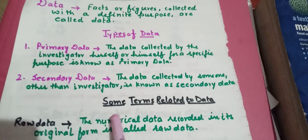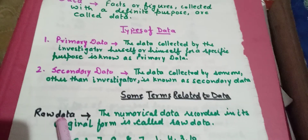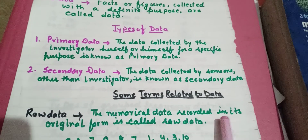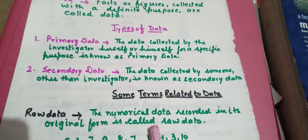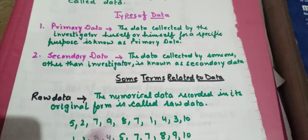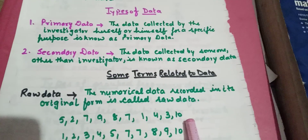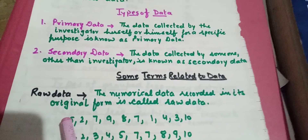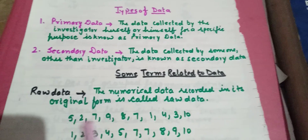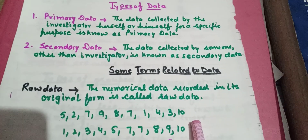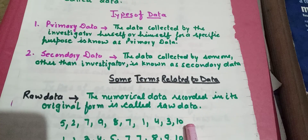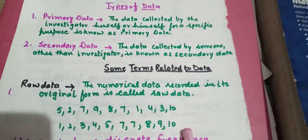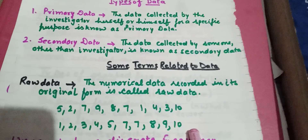Now, a few more terms related to data: raw data. The numeric data recorded in its original form is called raw data. Suppose these are the marks obtained by 10 students of your class — your data will be written roll-number wise. But for a specific purpose, to find certain information, we arrange them either in ascending order or in descending order.